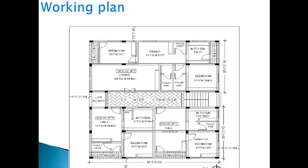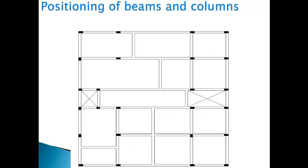This is the working plan I have taken for my project. It is a residential G plus 4 building consisting of a double bedroom and two individual single bedrooms. This is the positioning of beams and columns.